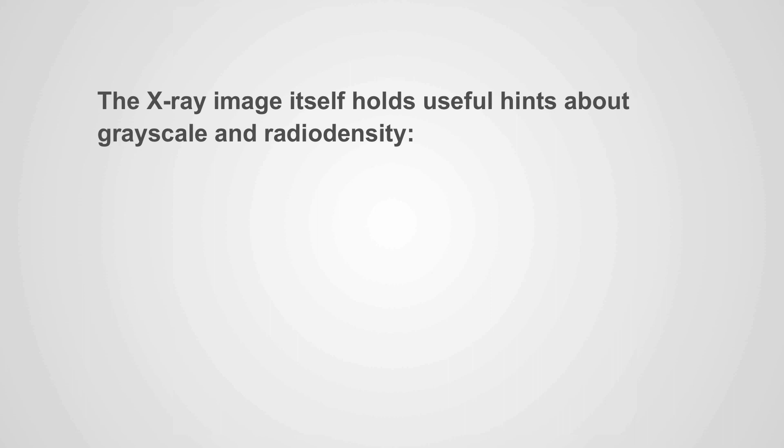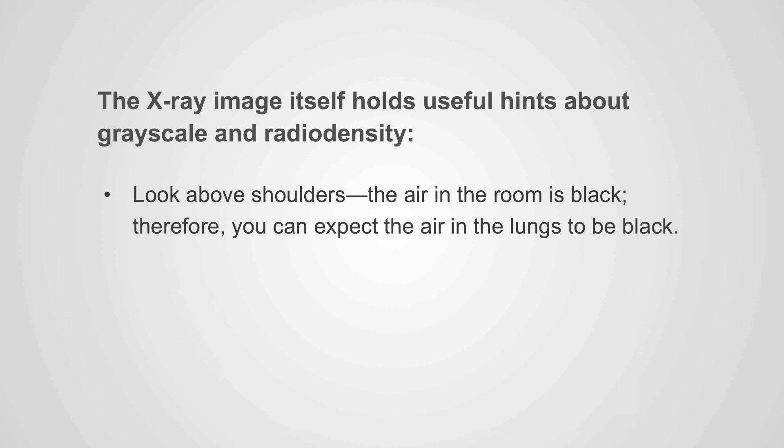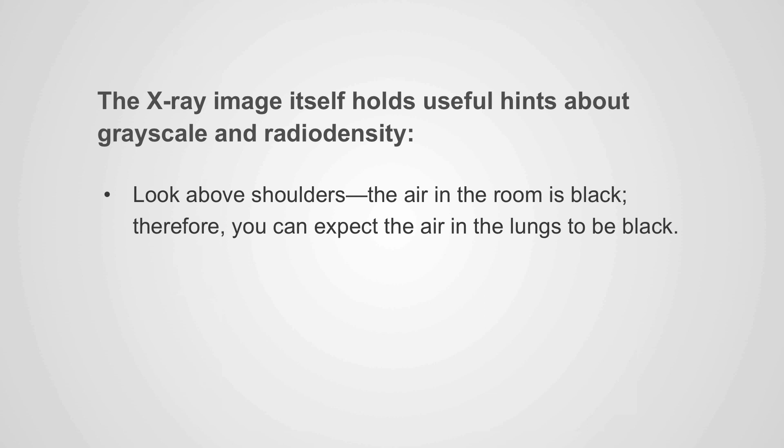So in recap, the x-ray image itself holds useful hints about grayscale and radiodensity. Look above the shoulders. The air in the room is black. Therefore, you can expect the air in the lungs to be black. Easily recognized bones such as the clavicles are white. The heart is soft tissue density and is gray. The x-ray markers are made of lead and are very white.